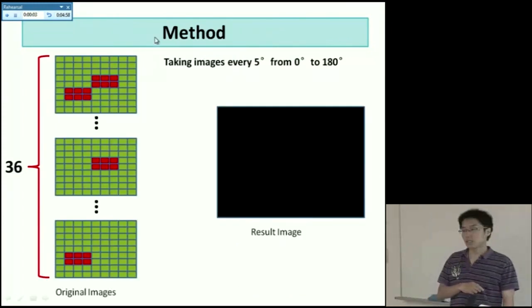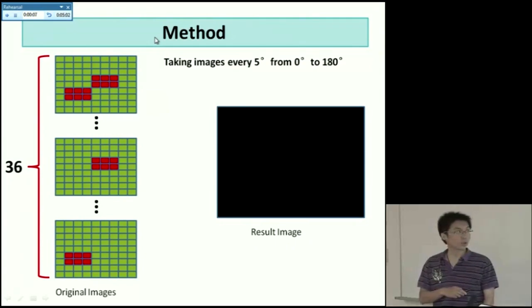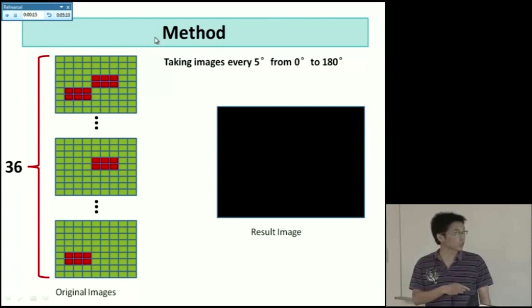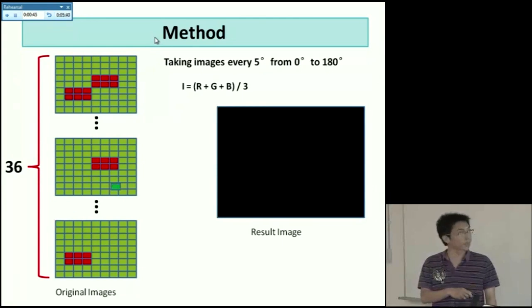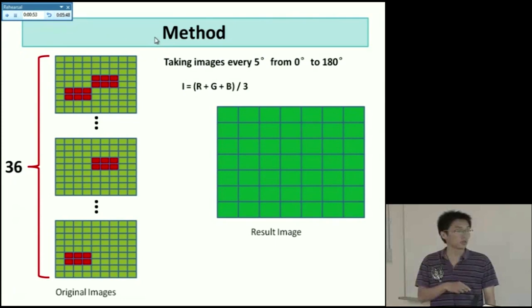And in order to remove all the halation, we use a combination of all the darkest point pixels method. First, we take images every 5 degree from 0 degree to 180. Then we got 36 images. Some of the images may contain only halation 1 and some of the others only contain halation 2. So we want to combine all of them. The combination method is first we calculate the first pixel's lighting density by this equation of each image. Then we can find the darkest pixel, which means the lowest lighting density. Then we can use this pixel as the first pixel of our result image. Then repeat the procedure until the last pixel. So we can get a result image. And all the halation parts should be removed.